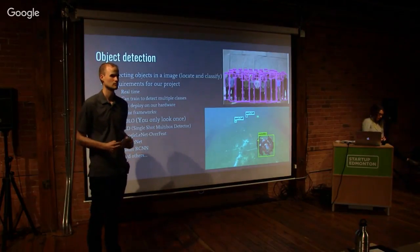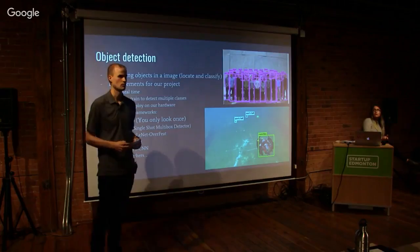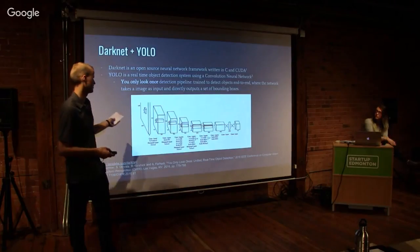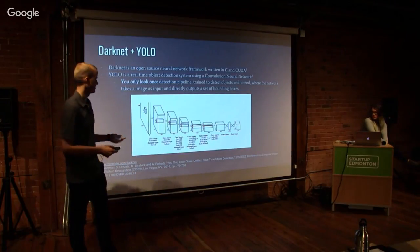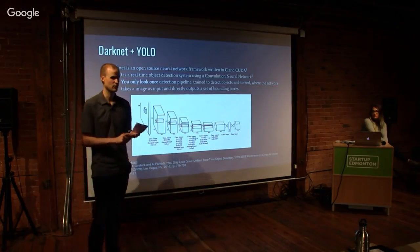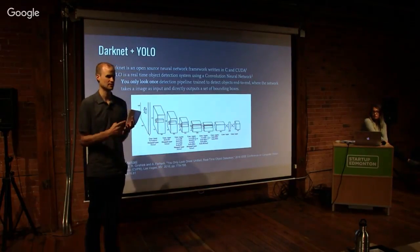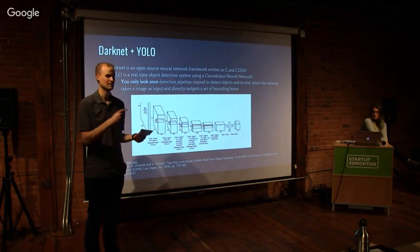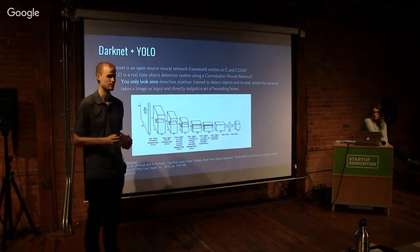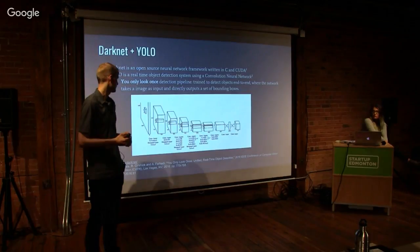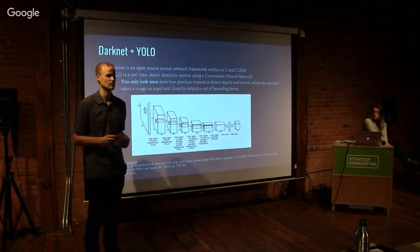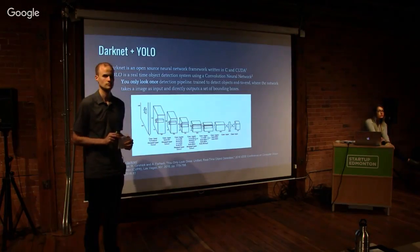Regarding the neural network structure: this is from the first YOLO paper, though we're using YOLO v2, which is very similar. There are about 24 convolutional layers, two fully connected layers, and several max pooling layers for downsampling. They use convolution filters of 1 by 1 or 3 by 3.